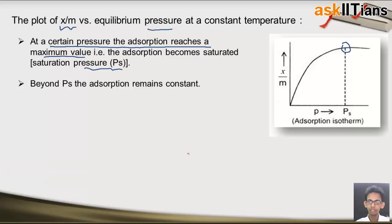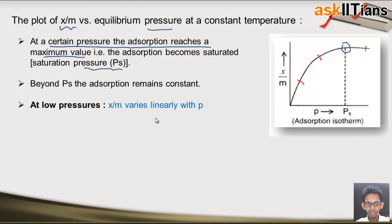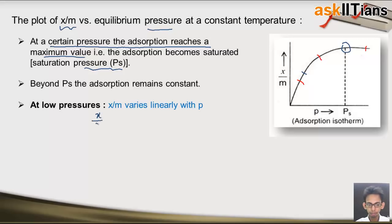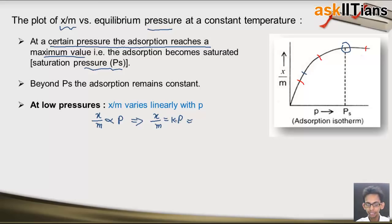We can divide this curve into three regions. The first region is when the pressure is very low. At low pressure, x upon m — that means the extent of adsorption — varies linearly with p. The plot is almost straight, which means x upon m is directly proportional to p, or we can write x upon m equals k times p. This is the condition when pressure is low: the extent of adsorption is directly proportional to pressure.